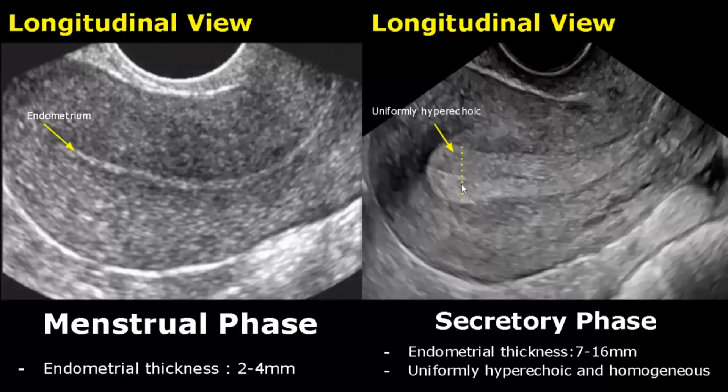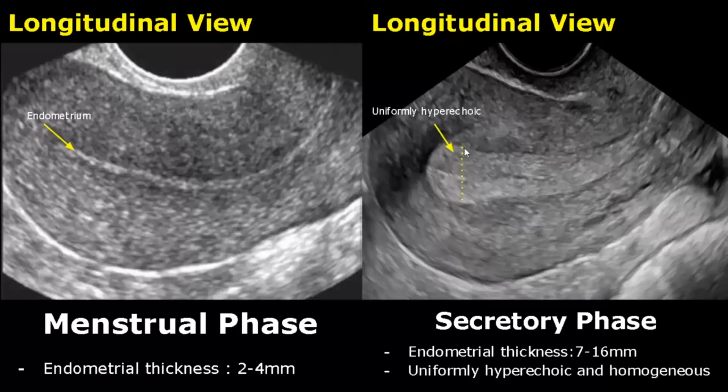In the secretory phase we may see the maximum endometrial thickness, which can be between 7 to 16 mm. It will appear hyperechoic, smooth, and homogeneous.